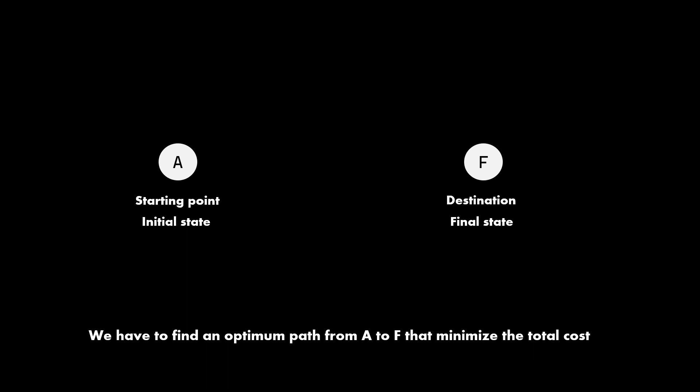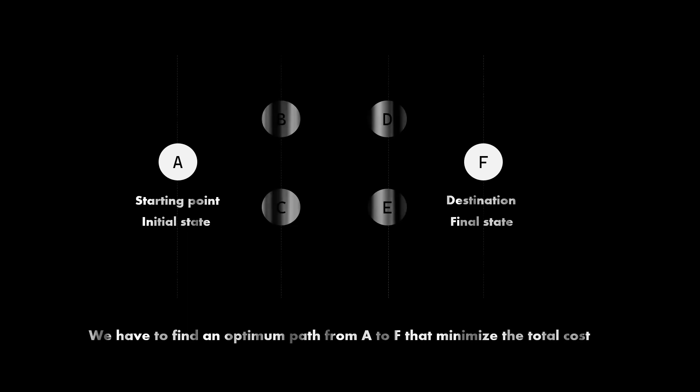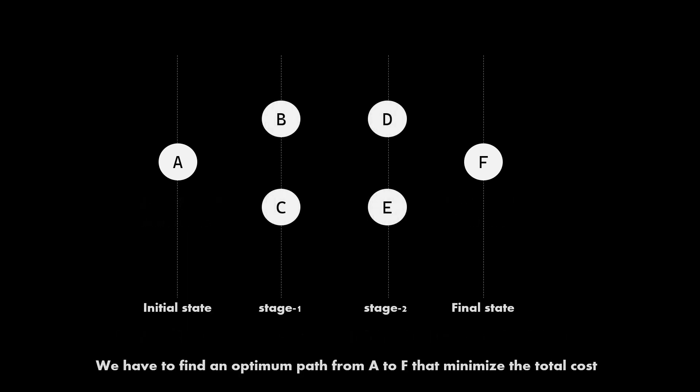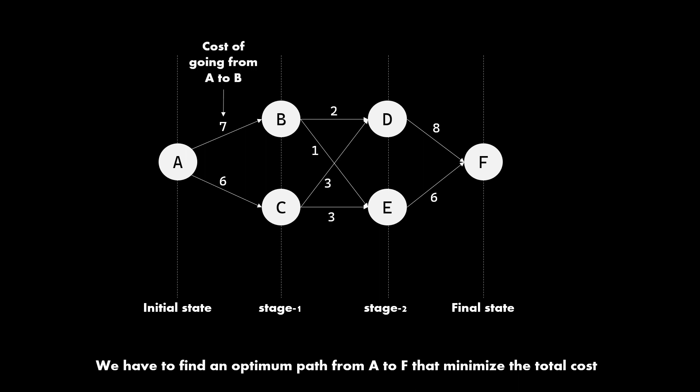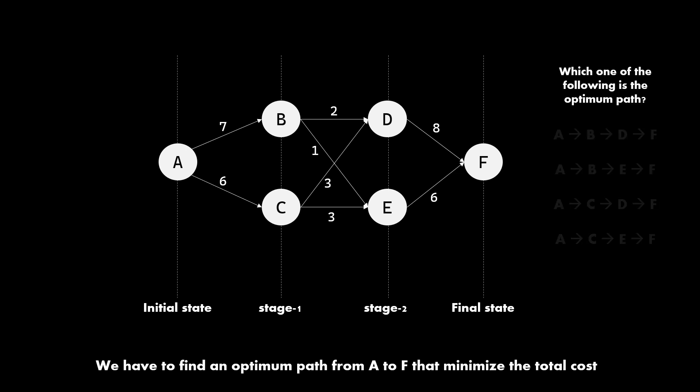Let us start with discussing the algorithm that we will be using. Let us say we want to go from A to F. A is our initial state and F is our final state. Let us say there are two stages to cross to go from A to F. Every transition has a cost — for example, the cost of going from A to B is 7. These are the possible paths to go from A to F. Which of these is the most optimum path that has the least cost? Dynamic programming gives a way of solving this problem.